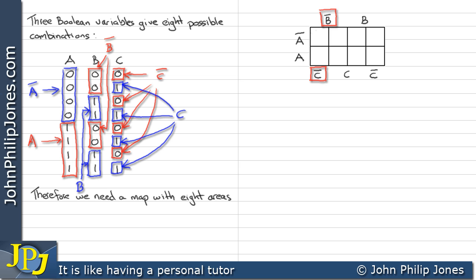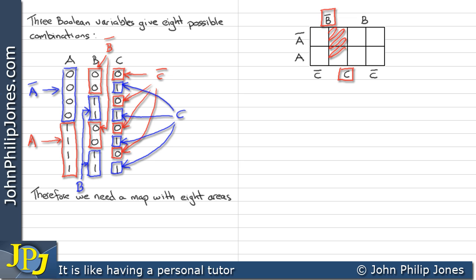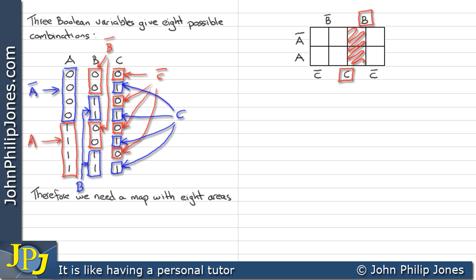If we take not B with not C, we have those 2 squares and that is not B and not C. If we take not B together with C, then that square there is B and C.